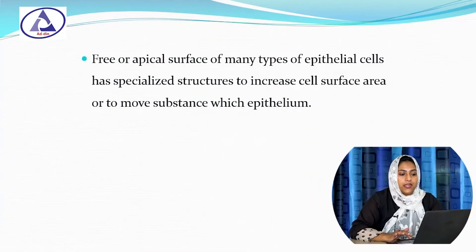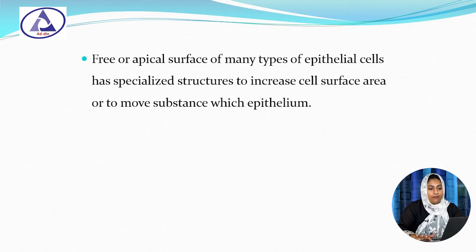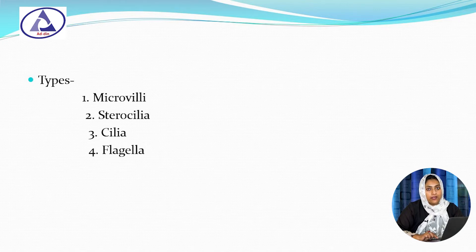What do you mean by cell surface modification? The free or apical surface of many types of epithelial cells has specialized structures to increase cell surface area or to move substances within the epithelium. There are four types of cell surface modification: number 1, microvilli; number 2, stereocilia; number 3, cilia; and number 4, flagella.